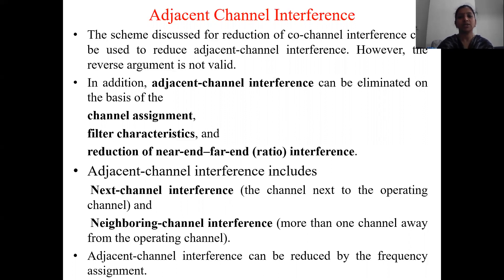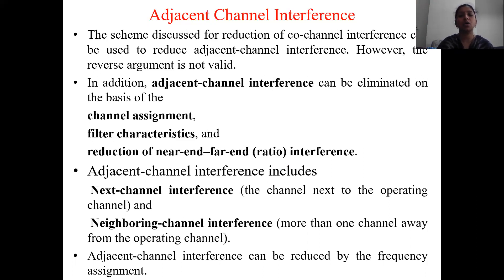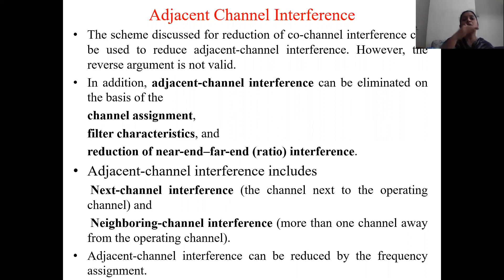Adjacent channel interference mainly includes next channel interference and neighboring channel interference. Next channel interference refers to the channel immediately next to the operating channel. Neighboring channel interference involves channels more than one channel away — the third, fourth, fifth, and so on — from the operating channel. While assigning frequencies f1, f2, f3, f4, f5, f6, f7 — for example, in the case of k equal to 7 — the same frequencies are repeated, so we must be careful about what frequency is assigned to the adjacent channel to minimize adjacent channel interference.